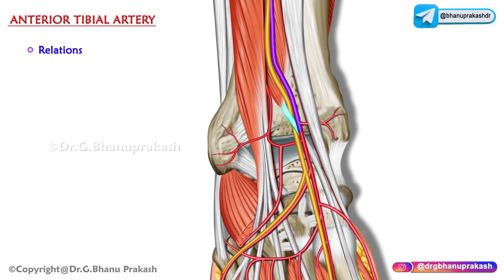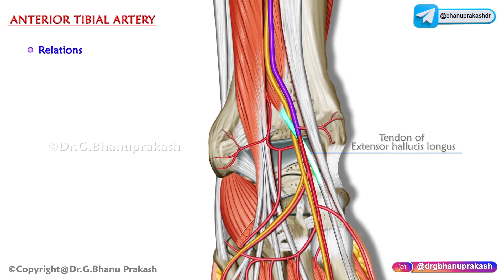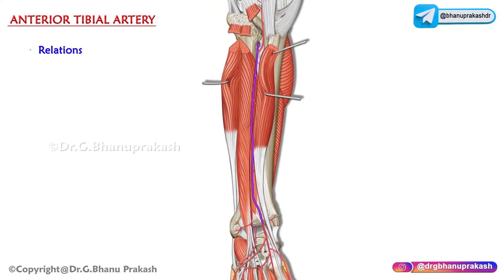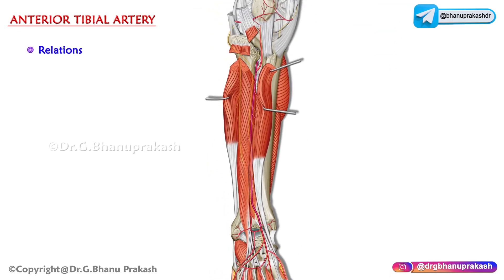The artery is crossed from the lateral to the medial side by the tendon of extensor hallucis longus. As a result, the deep peroneal nerve lies lateral to it in its upper one third and lower one third, and anterior to it in its middle one third.